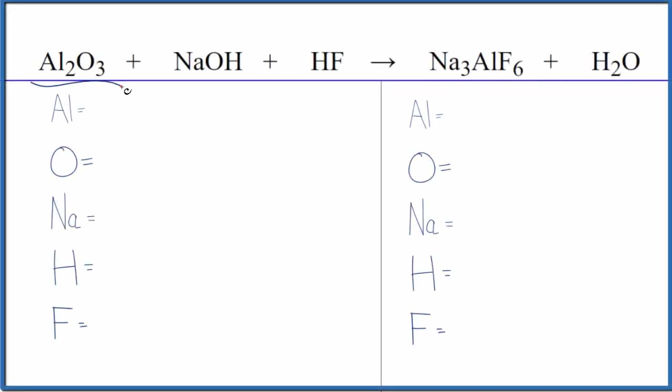Let's balance the equation for Al2O3 plus NaOH plus HF. We have aluminum oxide, sodium hydroxide, and hydrofluoric acid here.